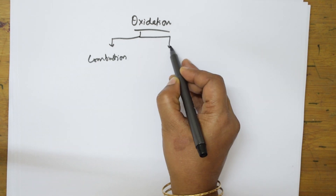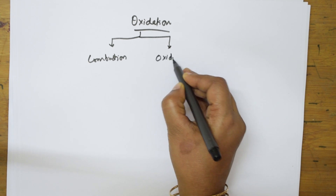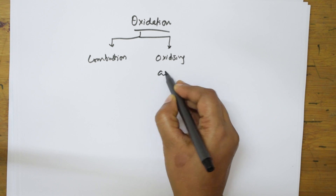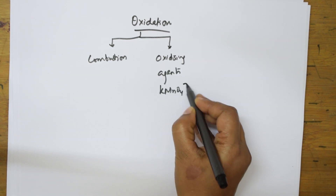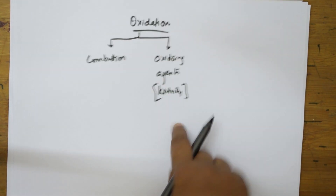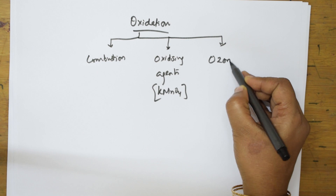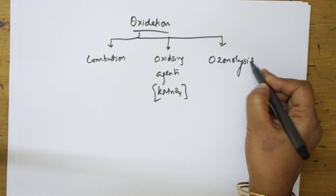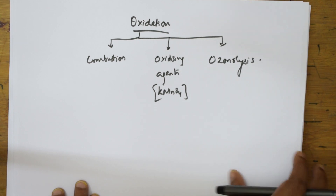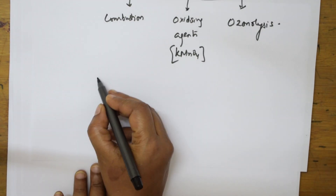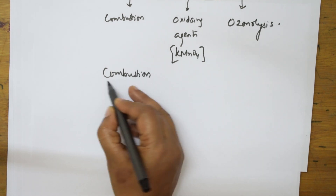We can also study oxidation using oxidizing agents like KMnO₄, which releases nascent oxygen. I can also study oxidation reaction under ozonolysis. Let us see the first one. Suppose if I take the combustion process. What is combustion?